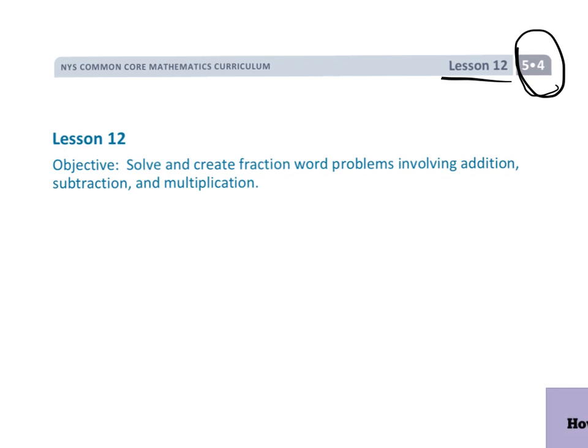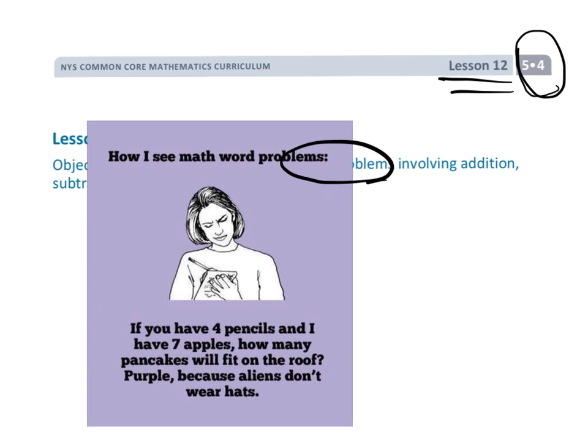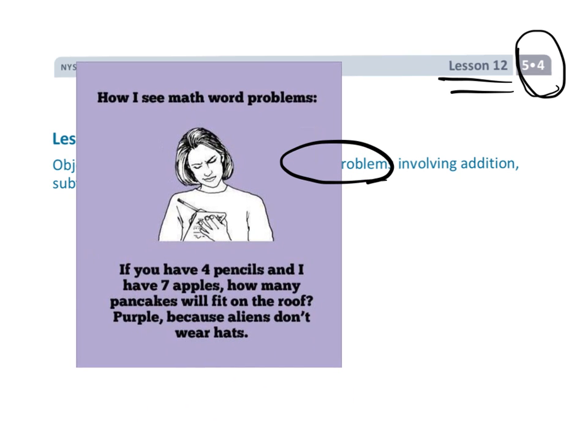All right, this is fifth grade module 4 lesson 12, and we're going to be doing some more word problems. Word problems are famously something people generally hate. This is how most people feel — 'if you have four pencils and I have seven apples, how many pancakes will fit on the roof? Purple, because aliens don't wear hats.' That's how a lot of people feel about word problems.